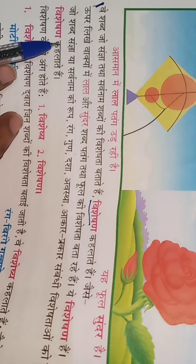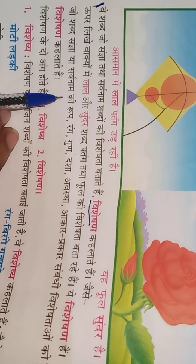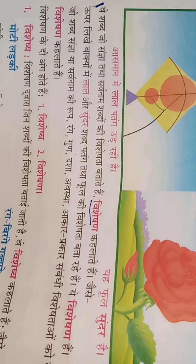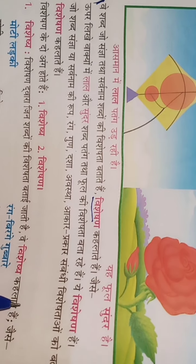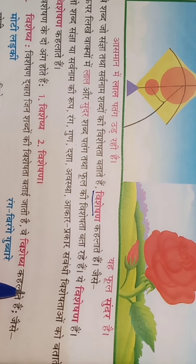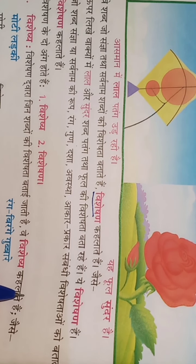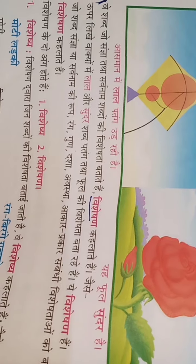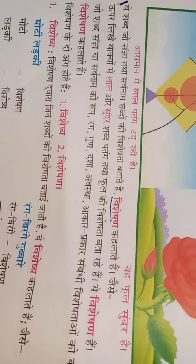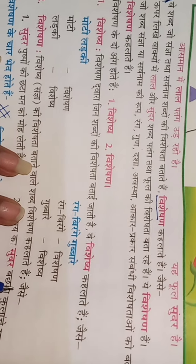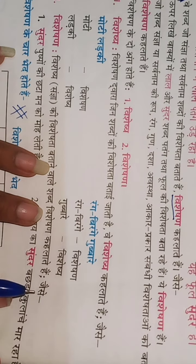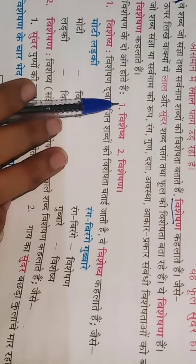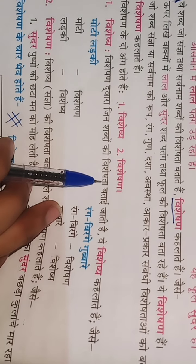The word that tells about the color, form, quality, condition, shape, and nature of a noun is called Visheshan. Visheshan ke do ang hote hain — Visheshan and Visheshya. Now I will tell you about Visheshya.